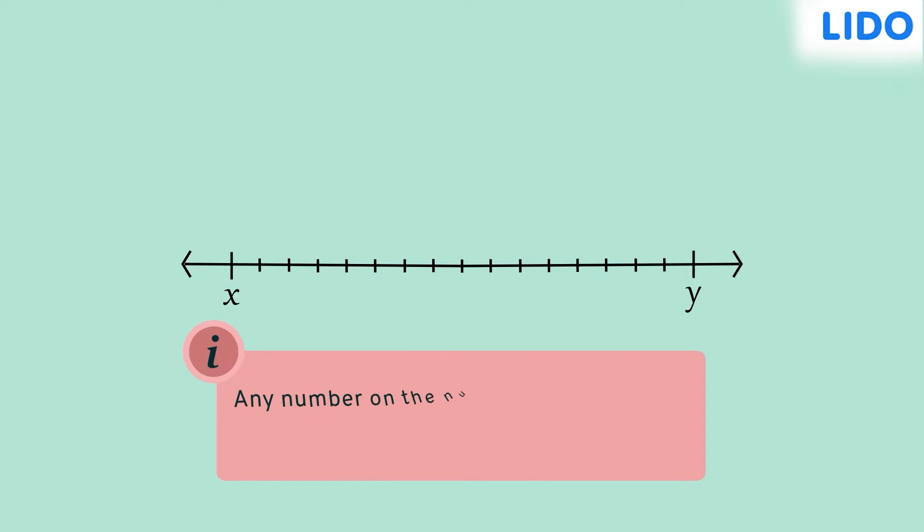Any number on the number line represents how far it is from 0. If we're given two rational numbers, 1 by 3 and 1 by 2, or half,